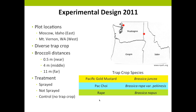We conducted this experiment in 2011, keeping our same plot locations: east in Moscow, Idaho and west in Mount Vernon, Washington. This time we kept only our diverse trap crop of all three species — Pacific Gold Mustard, Bok Choy, and Rape. To test trap crop proximity, we planted broccoli at three different distances: near (0.5 meters), middle (4 meters), and far (11 meters). For flea beetle removal, we had two treatments: sprayed and unsprayed with a pyrethroid insecticide. We used a conventional insecticide to ensure flea beetles were definitively killed, and we also had a control with no trap crops.